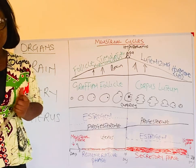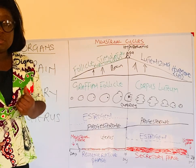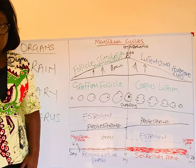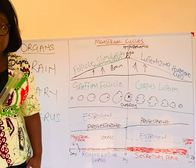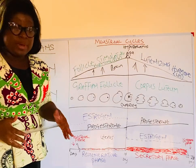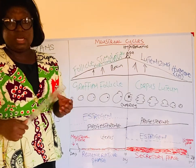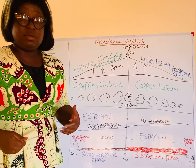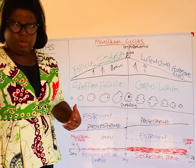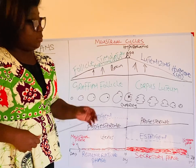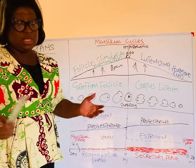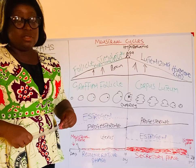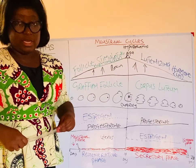Hello guys, welcome to my channel. Today we'll be talking about the menstrual cycle, and this is very important because it is the basis of our fertility. Without the menstrual cycle we cannot reproduce. A lot of people also want to go about their family planning by using the calendar method, to be able to tell when it is safe to have unprotected sex and when it is unsafe.